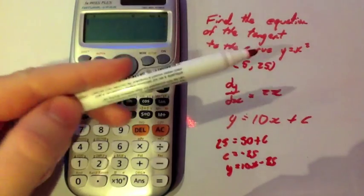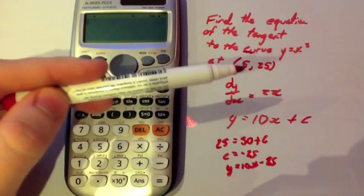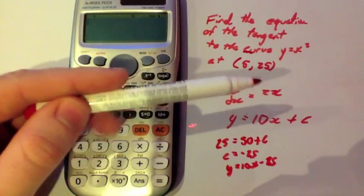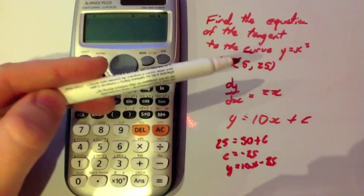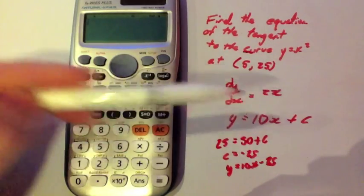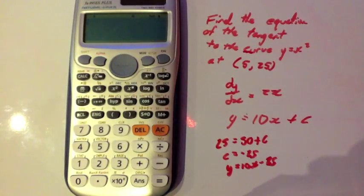Whenever you've got your y equals x squared, it won't tell you the differential is equal to 2x, but what it will do is differentiate it and put in the 5 to give you the gradient is 10. That can be very useful to check it, particularly if you've got quite a complex equation.